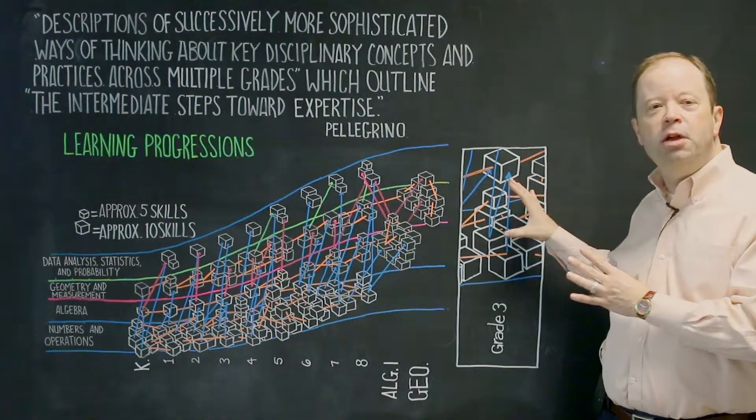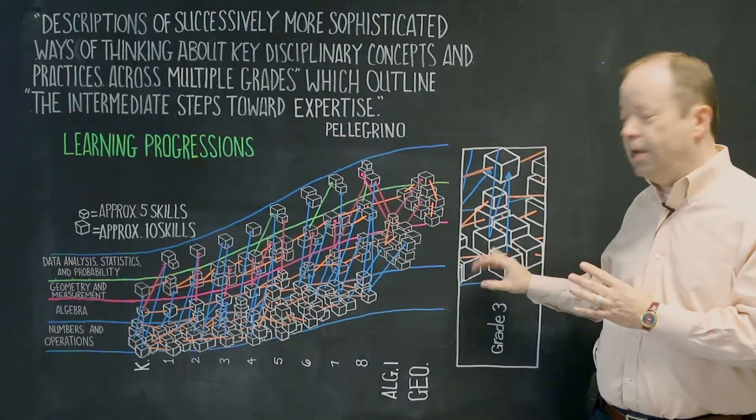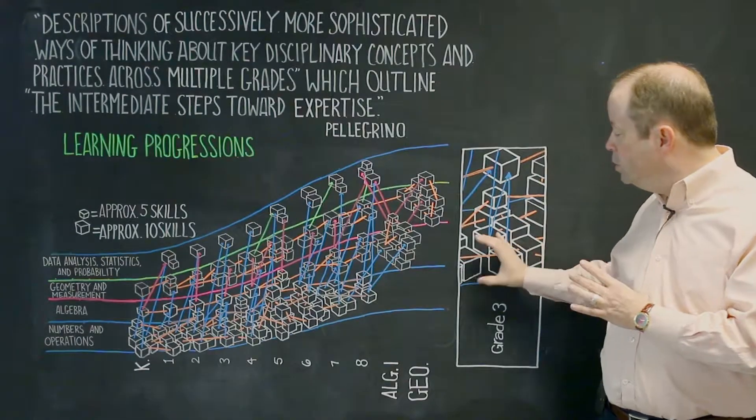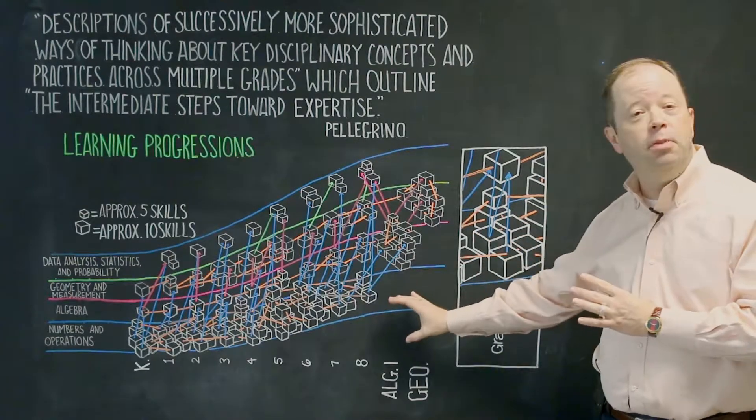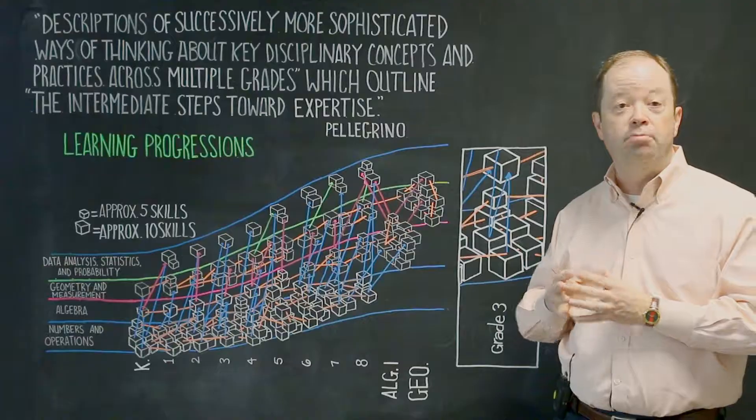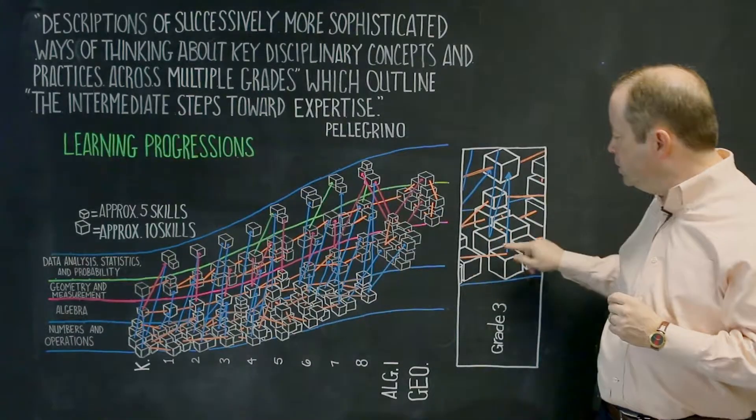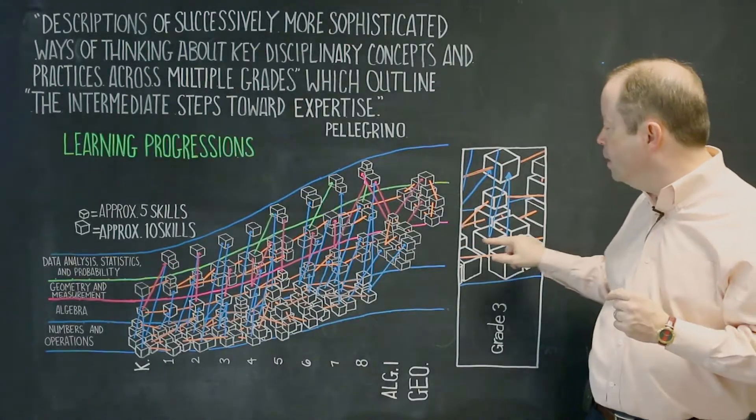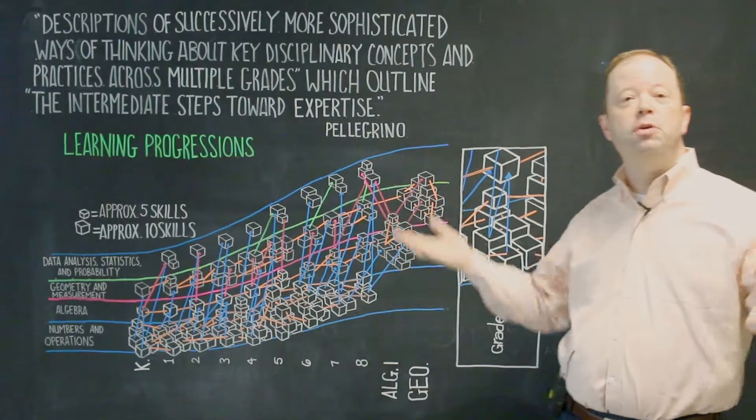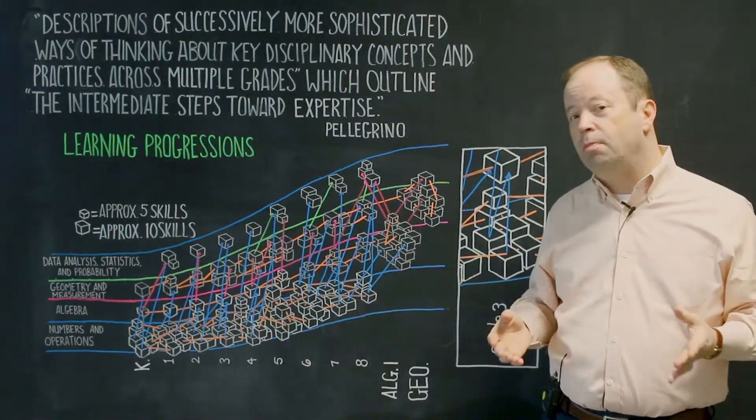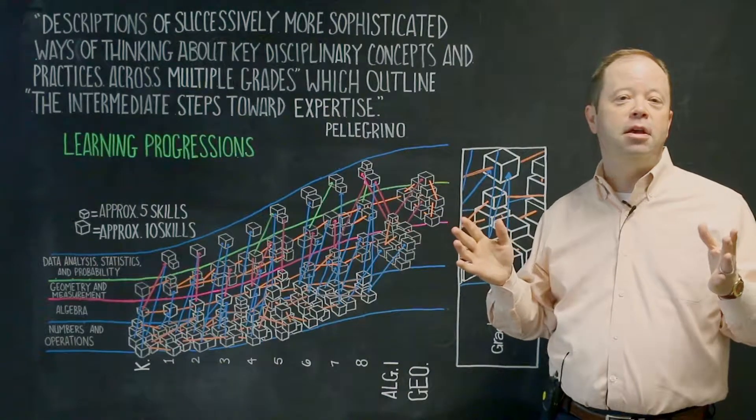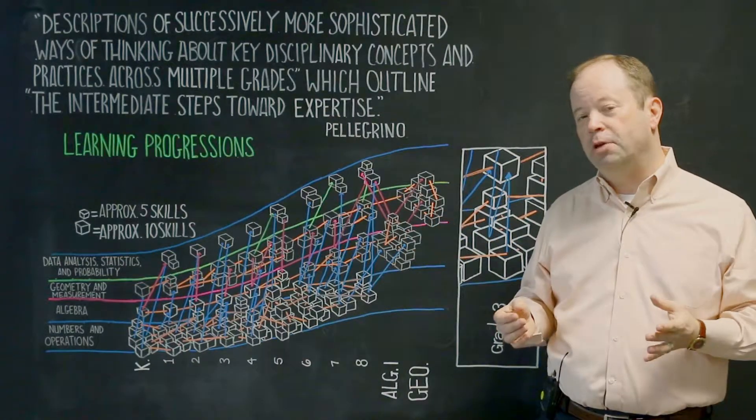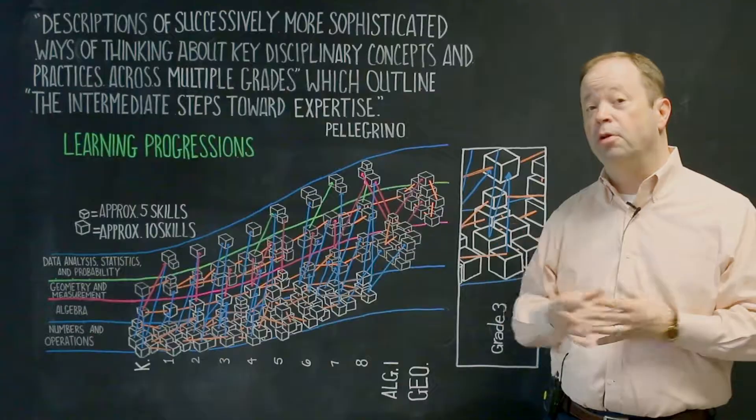For example, we see an expansion here, zoning in on the fact that around third grade, students learn some concepts in the numbers and operations domain, such as how to multiply. And based on what they learn in the numbers and operations domain, it then impacts what they're able to do in geometry. Because once you learn to multiply, you're then able to think about area as a new geometrical concept. And that's part of the progression.